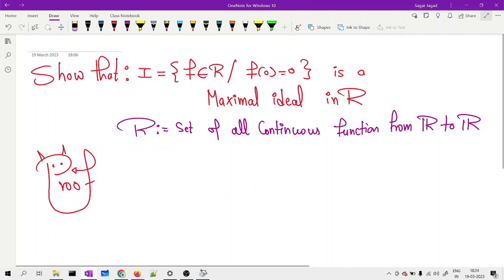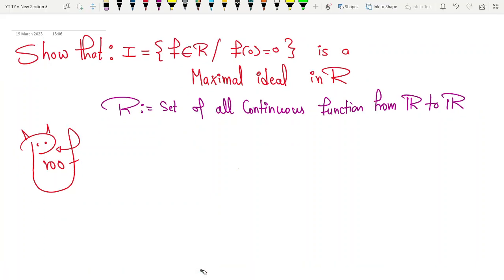Hello dear friends, welcome to this video. In this video I will be talking about this wonderful result that I need to prove: that I = {f ∈ R | f(0) = 0}, that means 0 is the root of f, is a maximal ideal in R, where R is the set of all continuous functions from real numbers to real numbers. A wonderful result and easy as well.